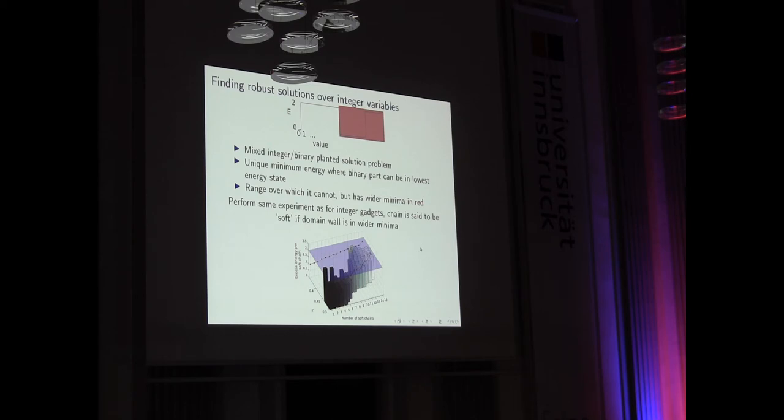So, much the same as before, you can find robust solutions for integer variables. Just embed them in this planted solution problem again, and basically you can see here I've plotted actually the value of S prime, how far back you go in your reverse anneal versus number of what I've called soft chains. What I do here is I couple this region of the chain, so it will have to frustrate the problem on the outside. So, this is my optimal state. This is where it's more robust, but I've had to frustrate somewhere else. And you can see, indeed, it searches here where you have more space to play around, more robust.